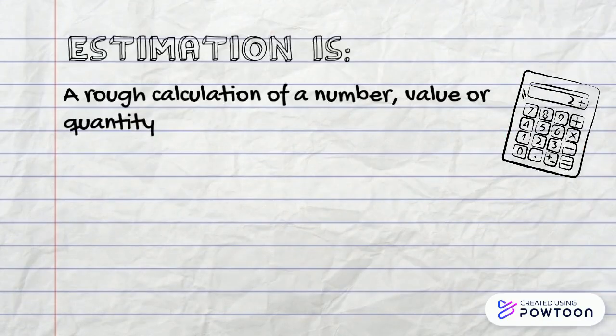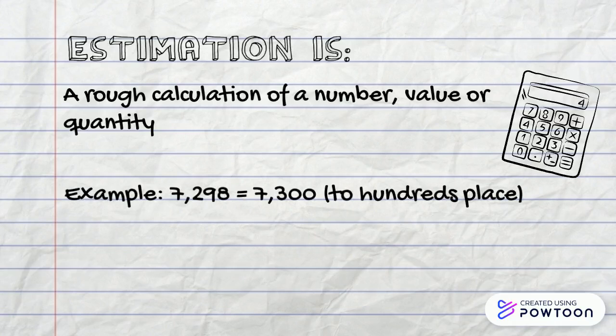Estimation is a rough calculation of a number, value or quantity. Example: 7298 rounded off to hundreds place is 7300.